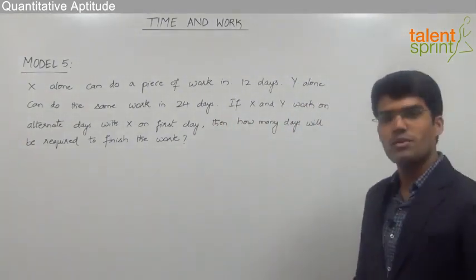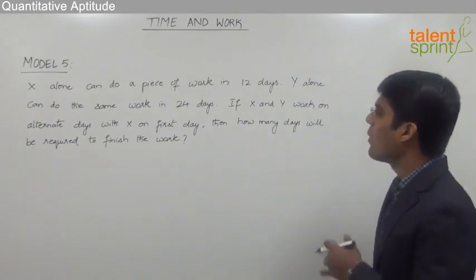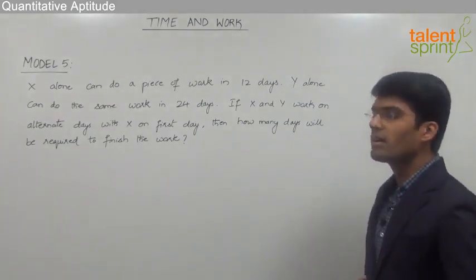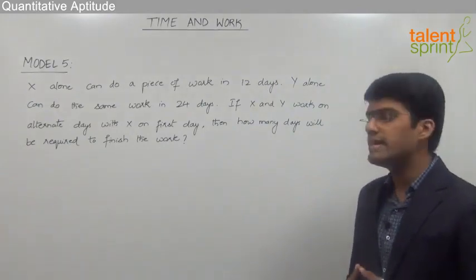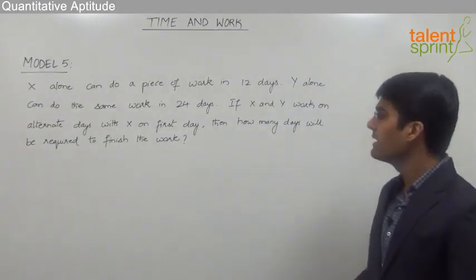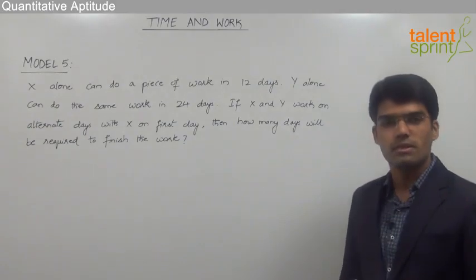X alone can do a piece of work in 12 days. Y alone can do the same work in 24 days. If X and Y work on alternate days with X on first day, then how many days will be required to finish the work?